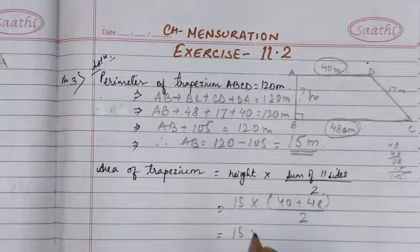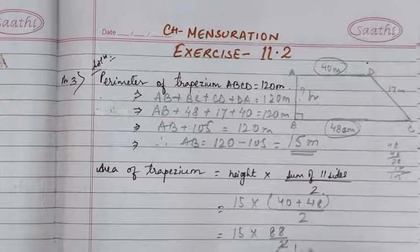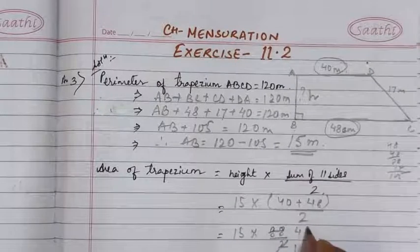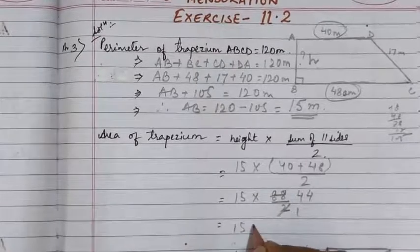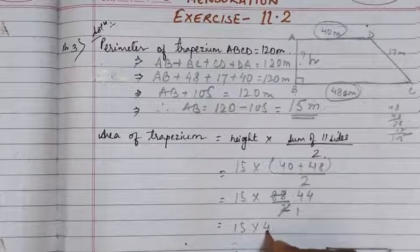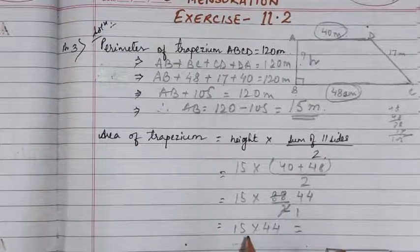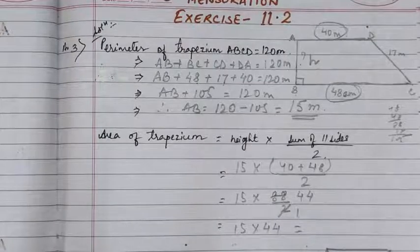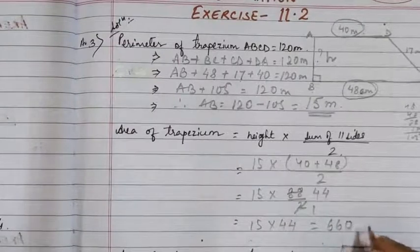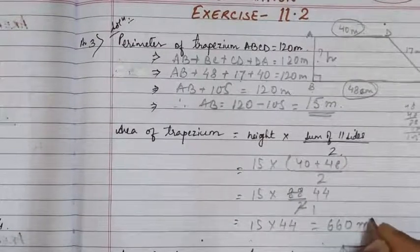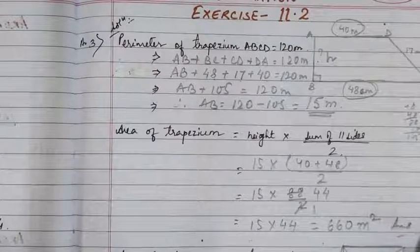This will be equal to 15 × 88 ÷ 2. Dividing 88 by 2 gives 44, so we have 15 × 44. When we multiply 15 × 44 we get 660. So the area is 660 m². This is the answer for question number 3.